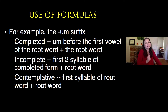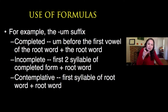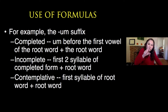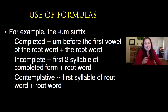Let's look at the formulas. For the um prefix, the completed aspect is formed by placing um before the first vowel of the root word plus the root word. For the incompleted aspect, you take the first two syllables of the completed form plus the root word. For the contemplated aspect, it's the first syllable of the root word plus the root word.